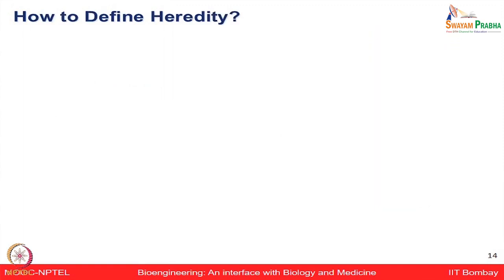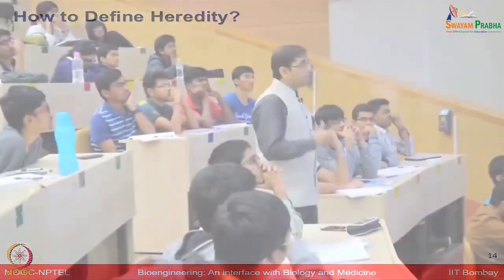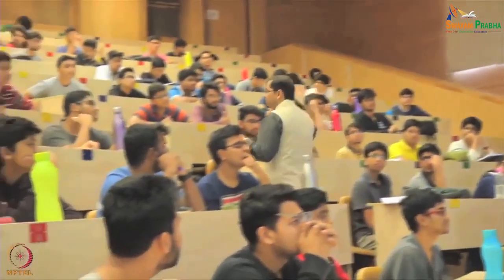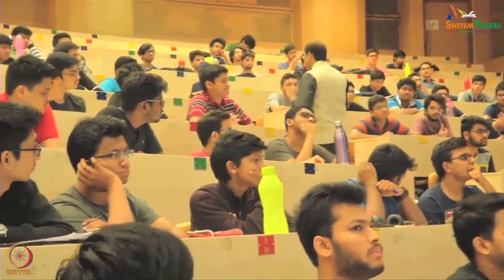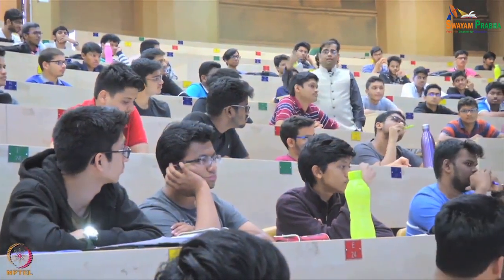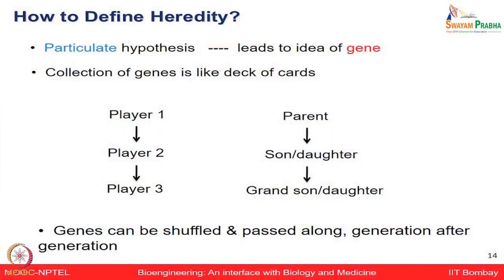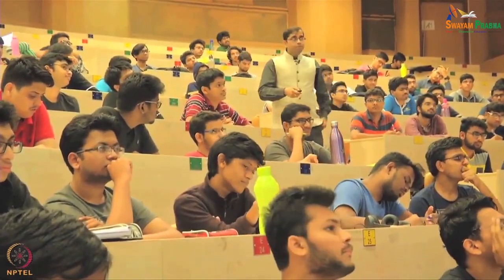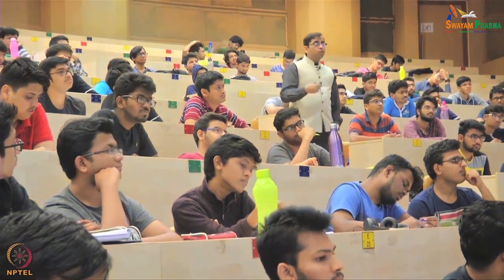How do we define heredity? People have tried to come up with different hypotheses. One is the particulate hypothesis — essentially like shuffling cards, you have no idea how genes are going to be distributed from one generation to the next, and that randomness became a more popular hypothesis. Another is the blending hypothesis, where genes from two parents blend like paint colors — blue and yellow making green — but this hypothesis is not as popular.